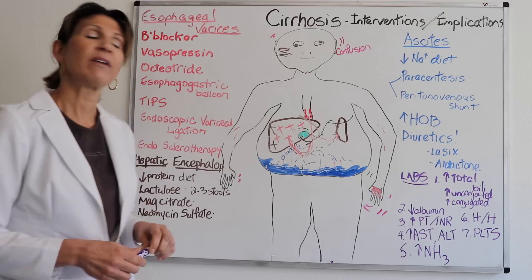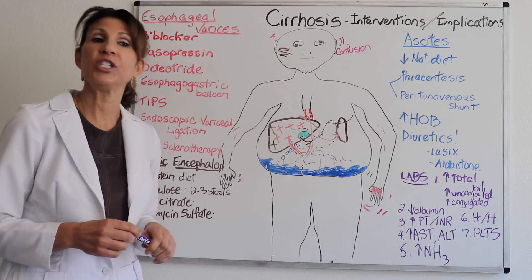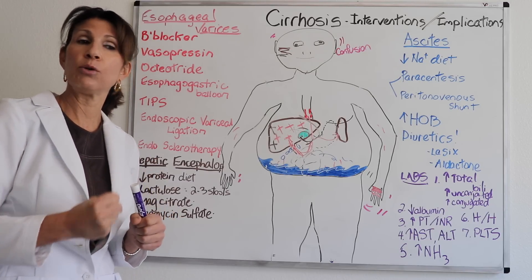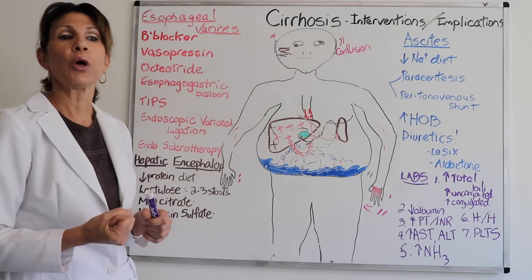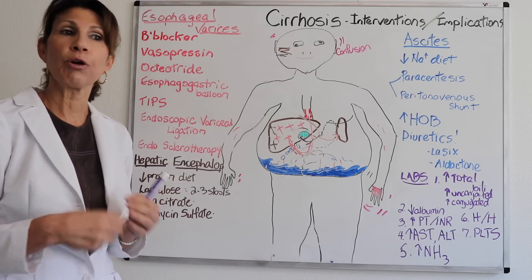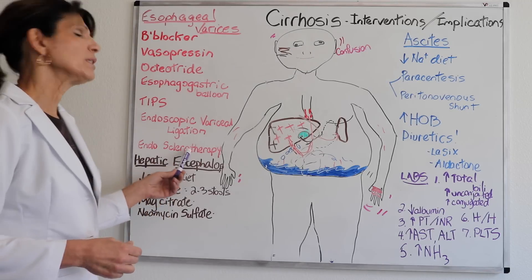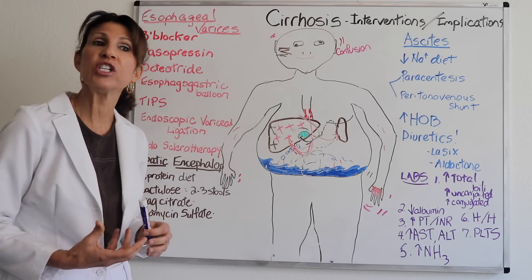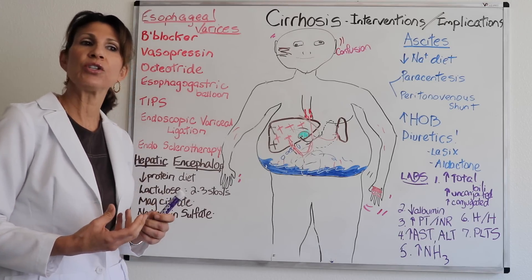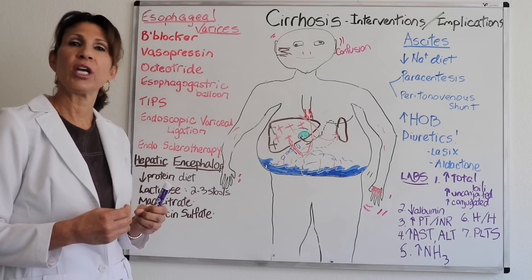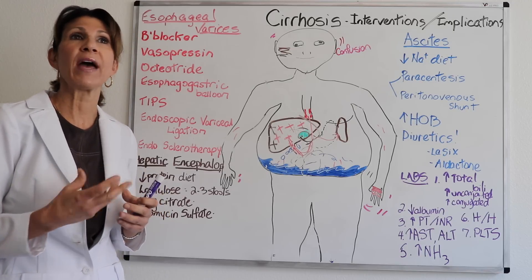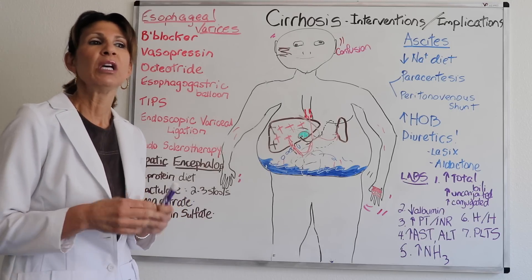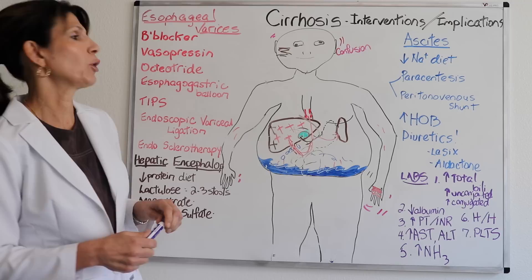There's also endoscopic variceal ligation, which is essentially like a rubber band applied to those bleeding vessels so they eventually necrose and slough off. Endoscopic sclerotherapy involves applying a sclerosing agent to the bleeding vessels, which renders that tissue non-functional — it necrotizes the area so the vessels are no longer bleeding.